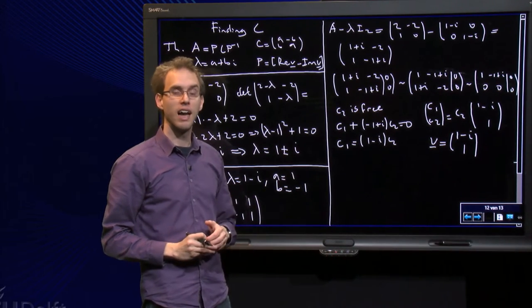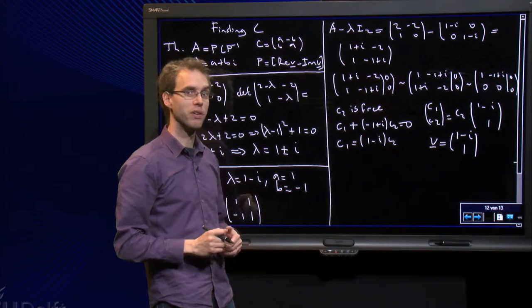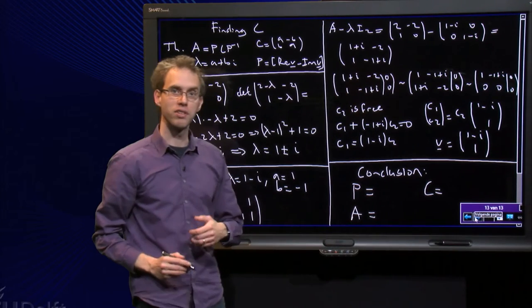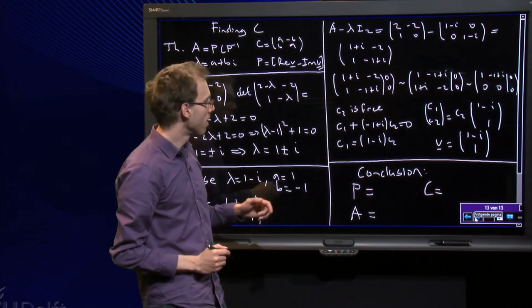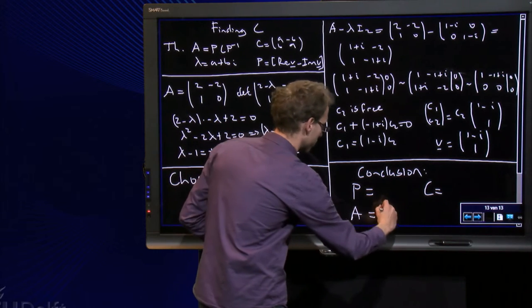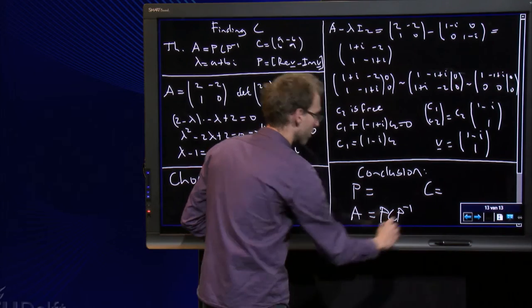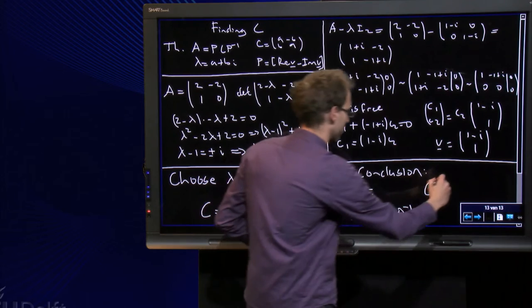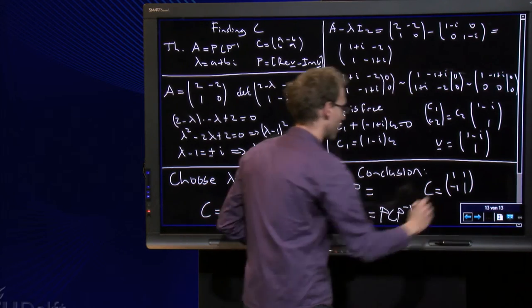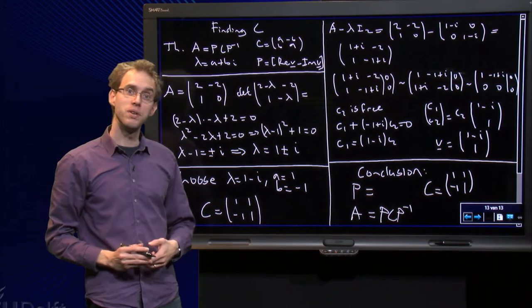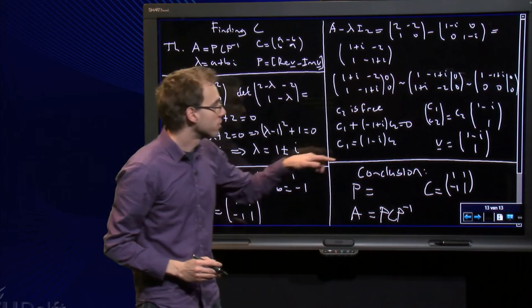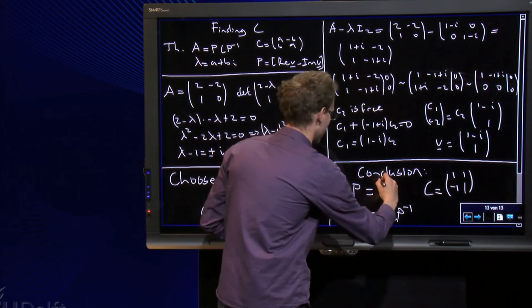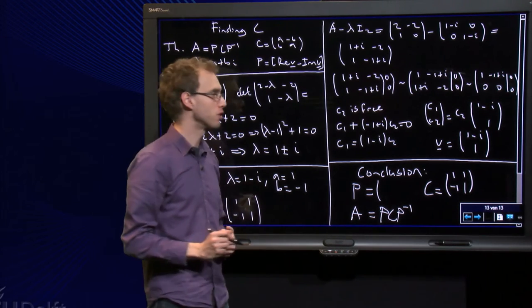So there we have an eigenvector corresponding to λ = 1 - i. And then we can wrap everything up to conclude: I know A equals PCP inverse. We have found our C already over here, and since we also have the eigenvector v, we can find the matrix P as well.